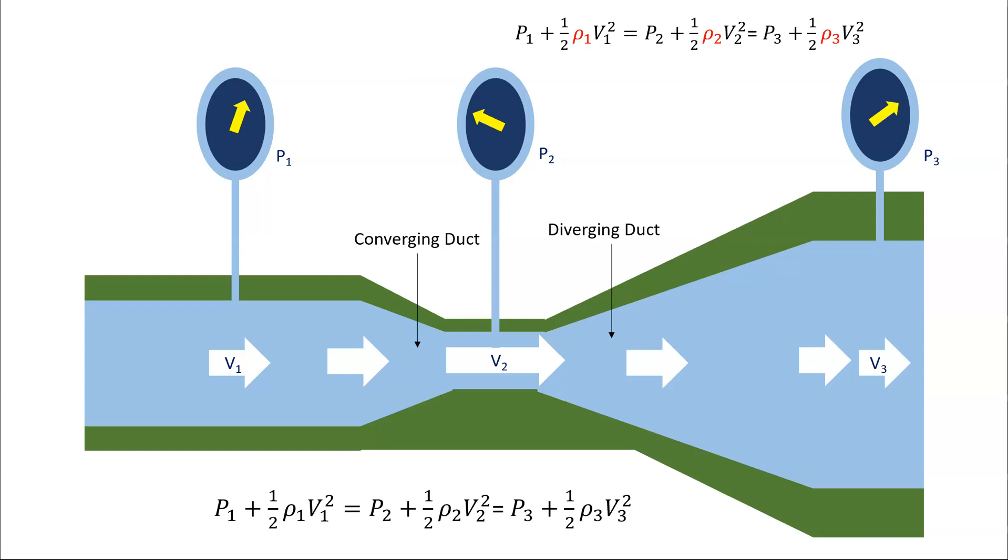So when we were talking about a venturi, for example, we call this part here the converging part, and this part here the diverging part. So the duct is converging to a point, and here it's diverging from that point.